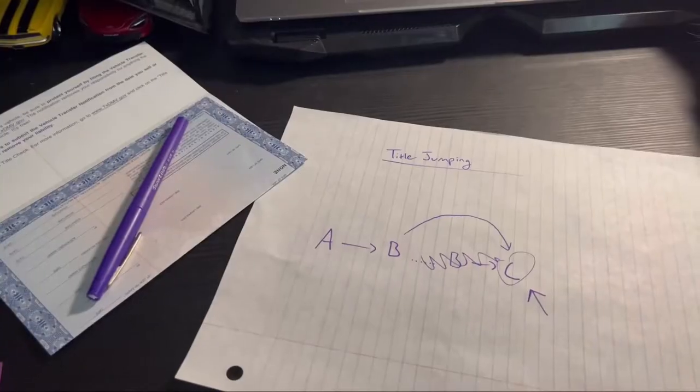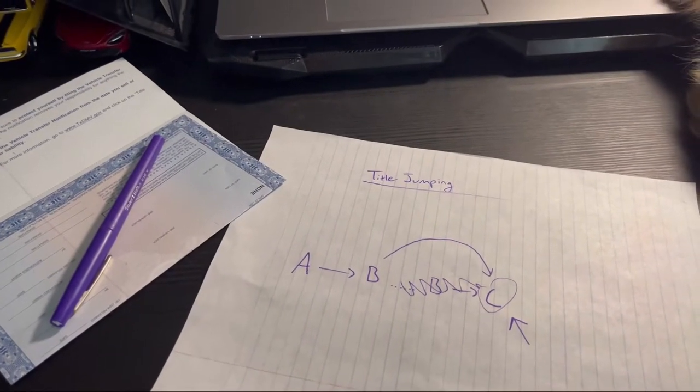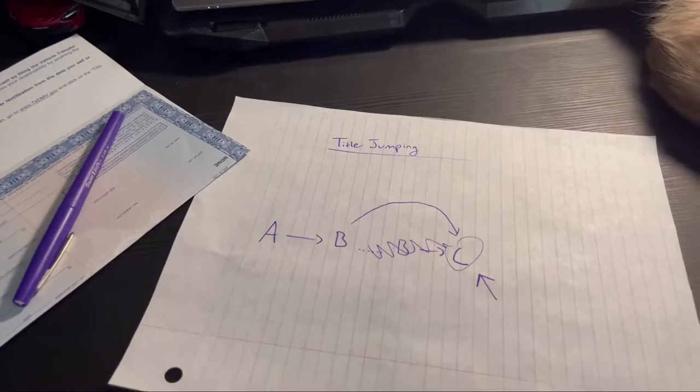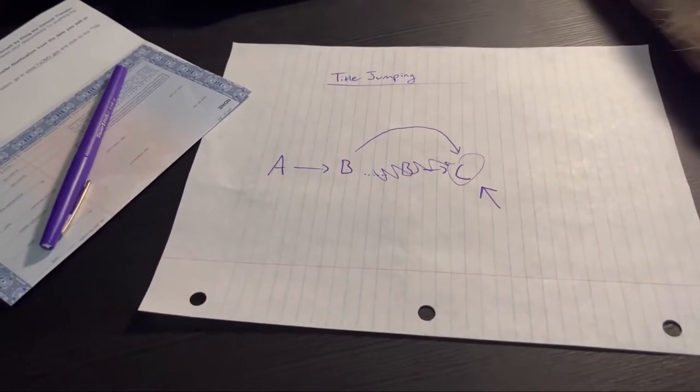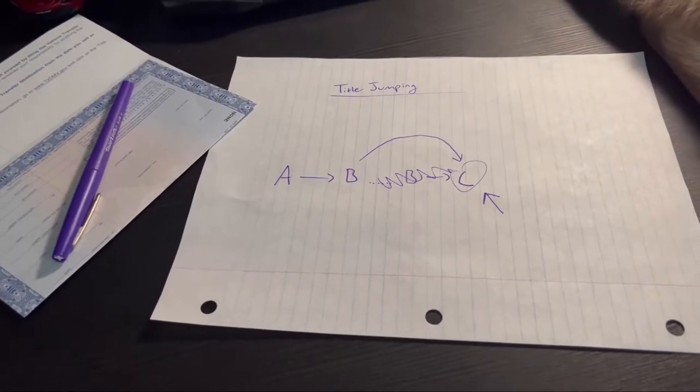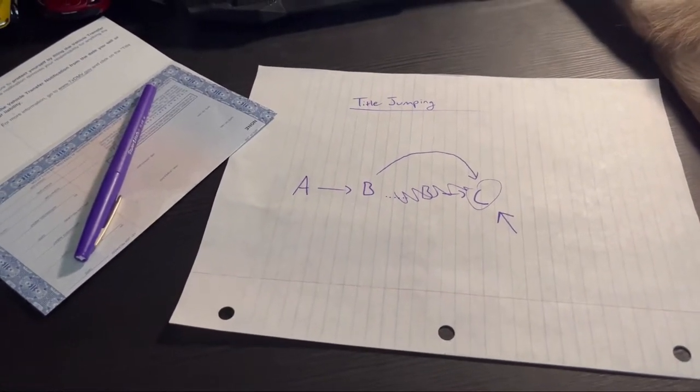As person C, you have no way to contact person A, which is not going to be good if person B title jumped on you because you need them for the Form 130U. You need the signature, the name, the address, and it all has to match, same as on the title.